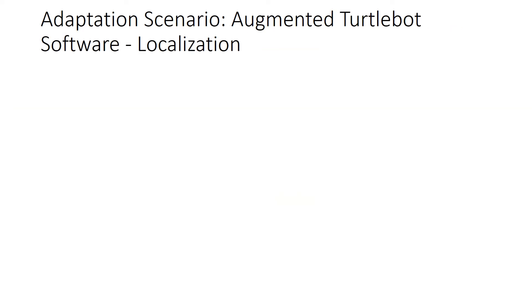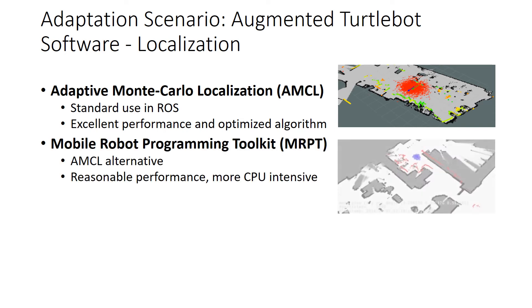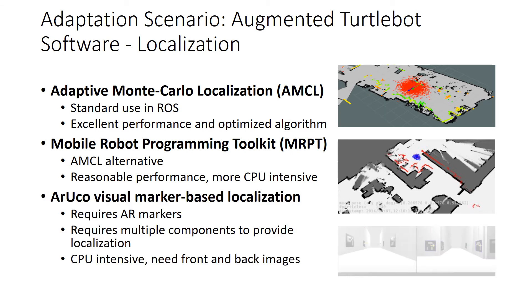When it comes to software, we focus on variations of different localization components available in ROS, which have different energy and performance trade-offs. The standard in ROS is Adaptive Monte Carlo Localization, or AMCL, which has excellent performance and an optimized algorithm. Alternatively, we can use MRPT, which has reasonable performance but is more CPU intensive. Finally, Aruco is a visual marker-based localization component that requires wall markers and multiple components to provide localization — it is CPU intensive and requires front and back camera images to determine the robot's position.